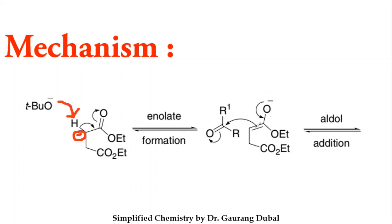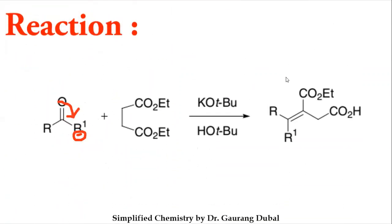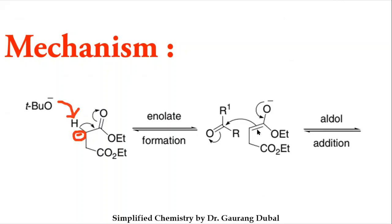The enolate bond shifts so that the negative charge is attracted to the partial positive charge on the carbonyl carbon of the ketone. As we know, delta-positive charge always forms on the carbonyl carbon and delta-negative on the oxygen due to electronegativity differences. The enolate carbon attacks the carbonyl carbon, resulting in an aldol addition, and the oxygen gains a negative charge.